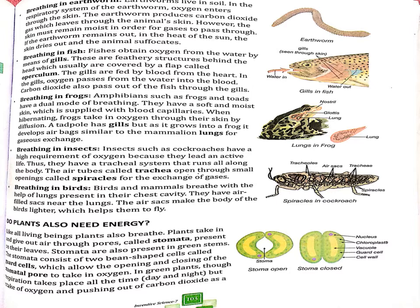Breathing in earthworm: if the heat of the sun dries the skin of an earthworm, it suffocates and may die. Next, breathing in fish: fish breathe through gills. You can see the gills on the screen — oxygen from water passes through the skin and gills.